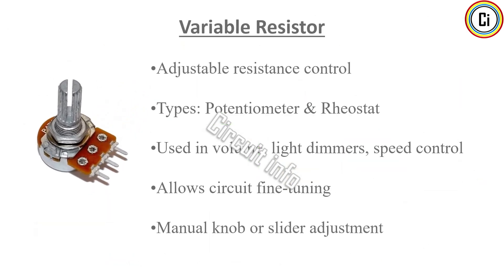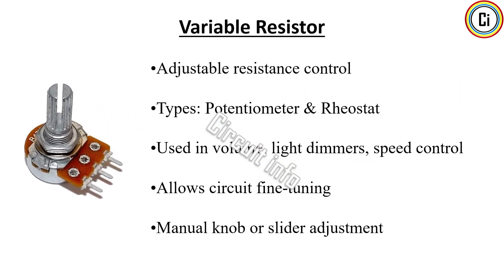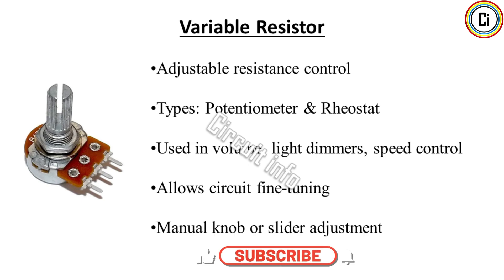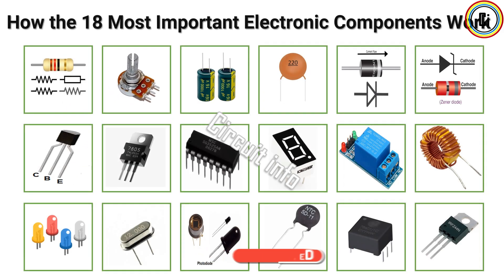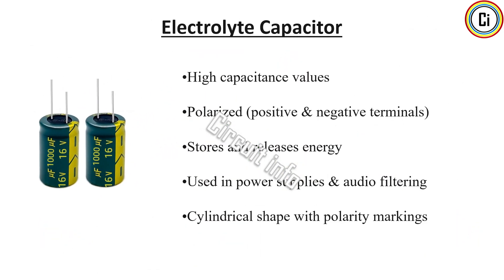A variable resistor lets you adjust the resistance manually, changing the amount of current flowing through a circuit. This adjustment can be done by rotating a knob or sliding a contact along a track. Potentiometers are commonly used in audio volume controls, and rheostats are often found in industrial equipment. They are essential in applications where precise control of voltage or current is required, such as light dimmers, fan speed controllers, and tuning radio frequencies. Variable resistors give flexibility during circuit design and testing.